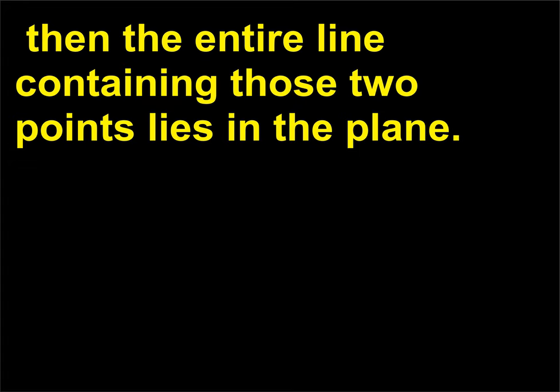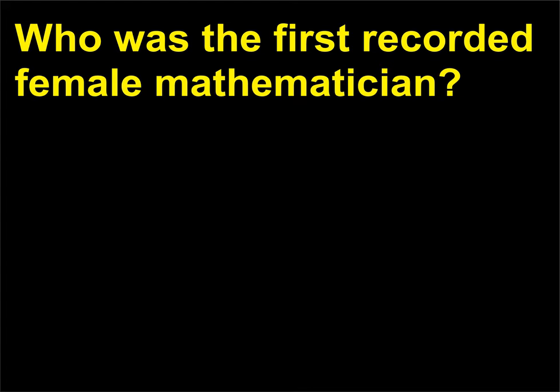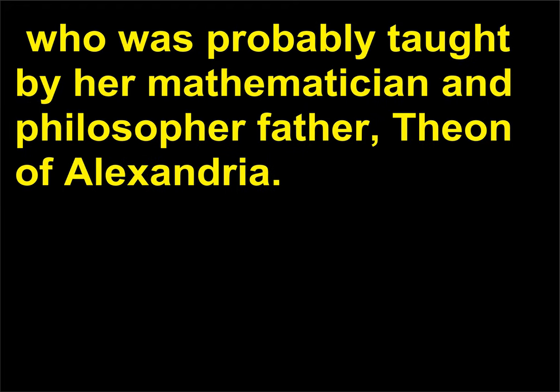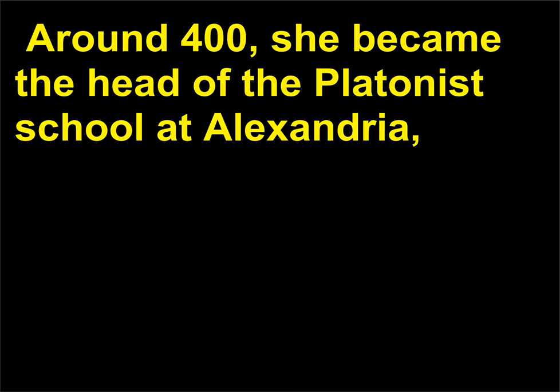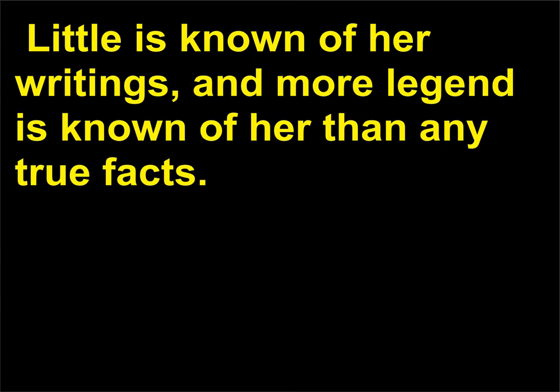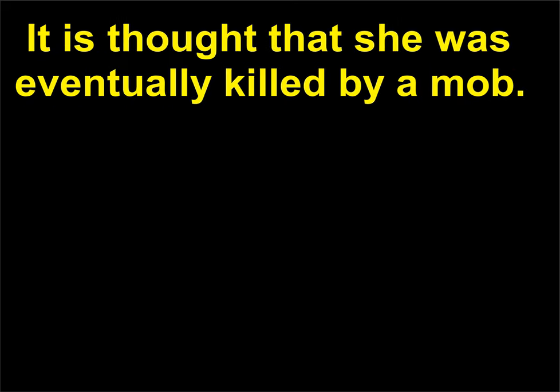Who was the first recorded female mathematician? The first known female mathematician was Hypatia of Alexandria (370-415), who was probably taught by her mathematician and philosopher father, Theon of Alexandria. Around 400, she became the head of the Platonist school at Alexandria, lecturing on mathematics and philosophy. Little is known of her writings, and more legend is known of her than any true facts. It is thought that she was eventually killed by a mob.